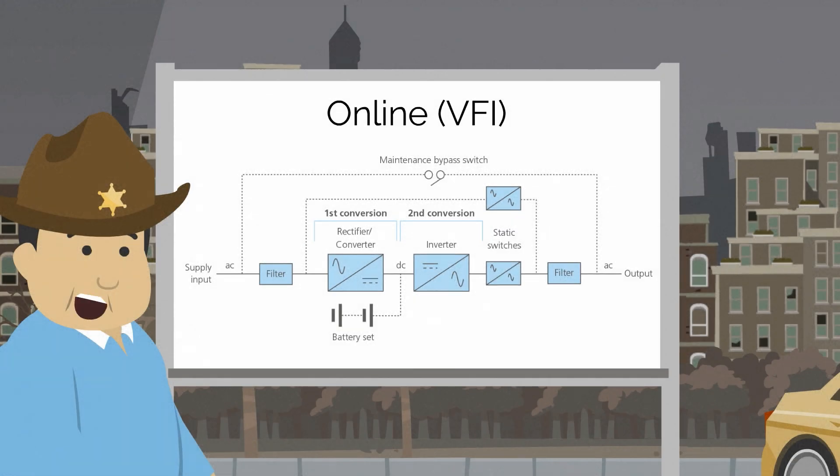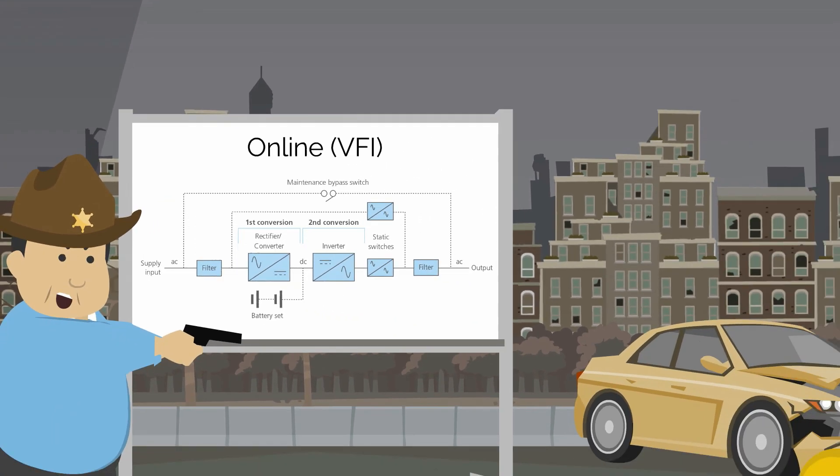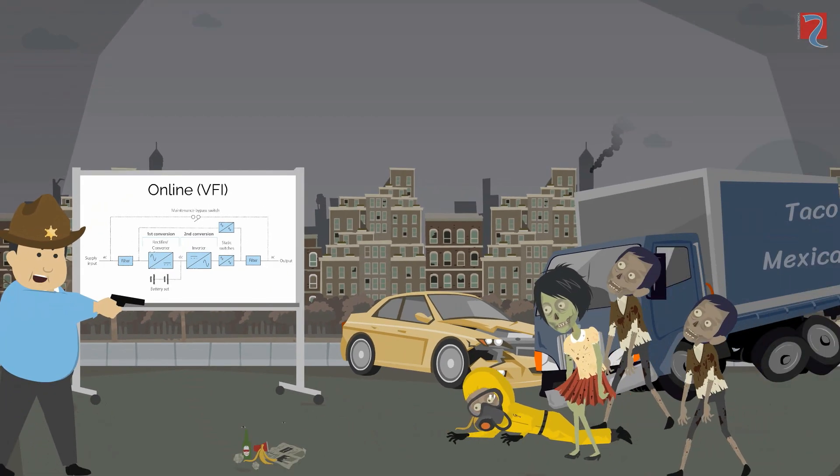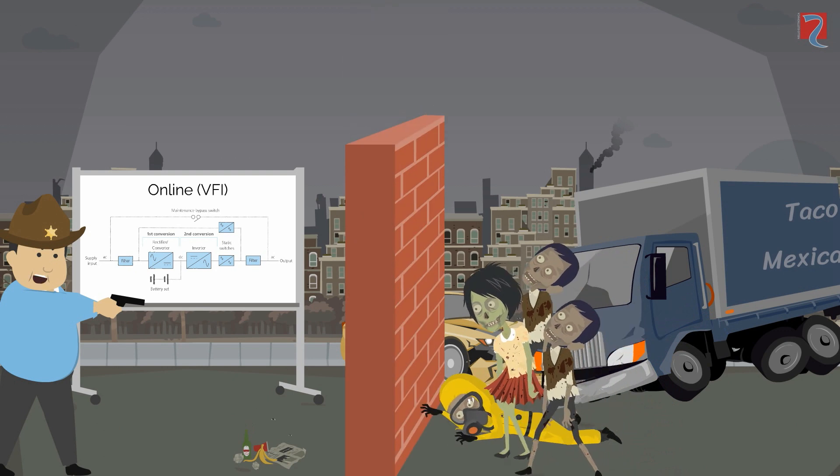If a mains power failure or a disturbance occurs, there is no break in power while the system switches over. Simply, the rectifier switches off and allows the inverter to take power from the battery set automatically. The batteries in an online UPS design are always connected to the inverter ready for any power event. As a result of the conversion to DC power, any disturbances on the incoming supply are stopped in their tracks.